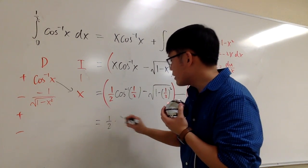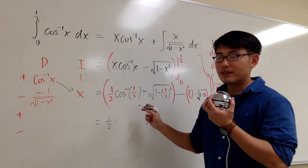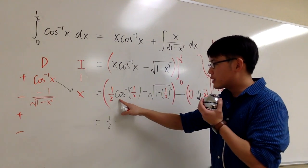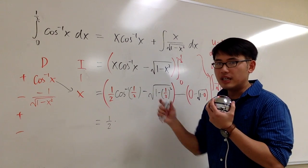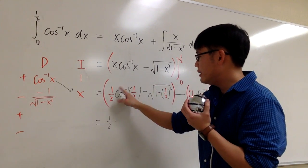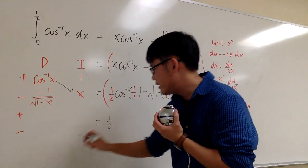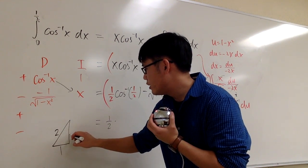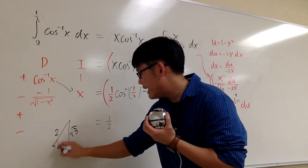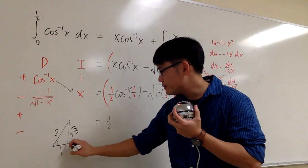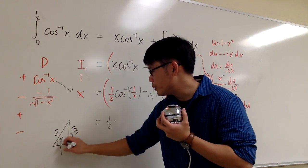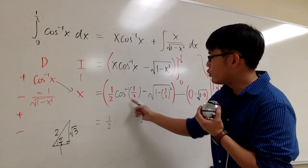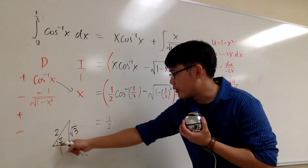So we need 1/2 times the inverse cosine of 1/2. To find this without a calculator, recall that cosine equals adjacent over hypotenuse. The result is an angle, so we draw a triangle with adjacent 1 and hypotenuse 2, making the opposite side square root of 3. This is a special 30-60-90 triangle, and the angle whose cosine is 1/2 is pi over 3, because that angle is 60 degrees.